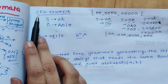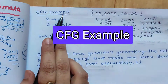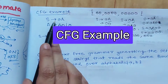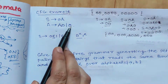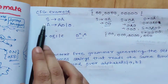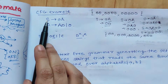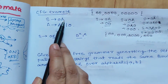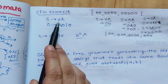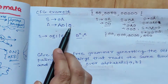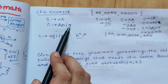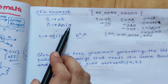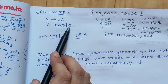Now we will discuss one example of context free grammar. The production rules are: S gives 0A, and A gives A0 or 0. S is the start symbol, A is the non-terminal, and 0 is the terminal symbol. This constitutes the grammar.